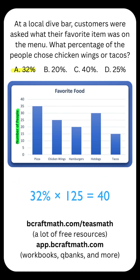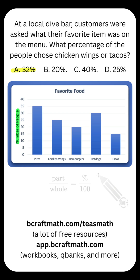And a little fun fact: circle back around and take 32 percent of the total — 32 percent of 125. Multiplying that together does give you 40. There are those 40 people that either chose chicken wings or tacos.